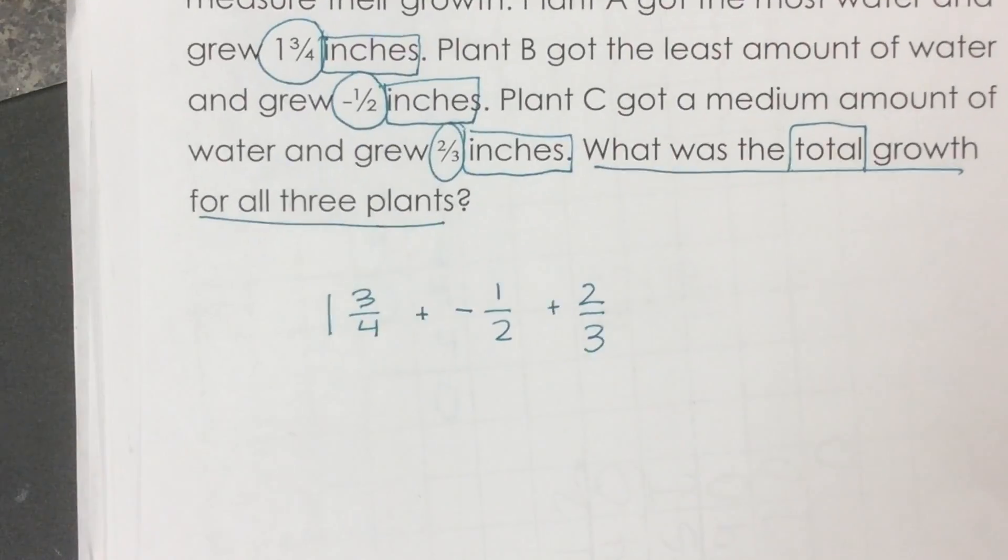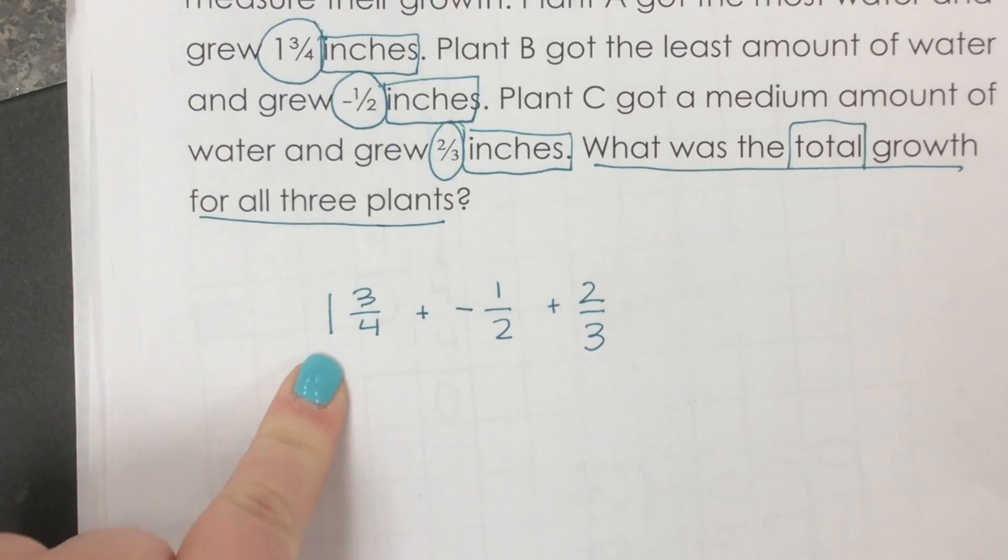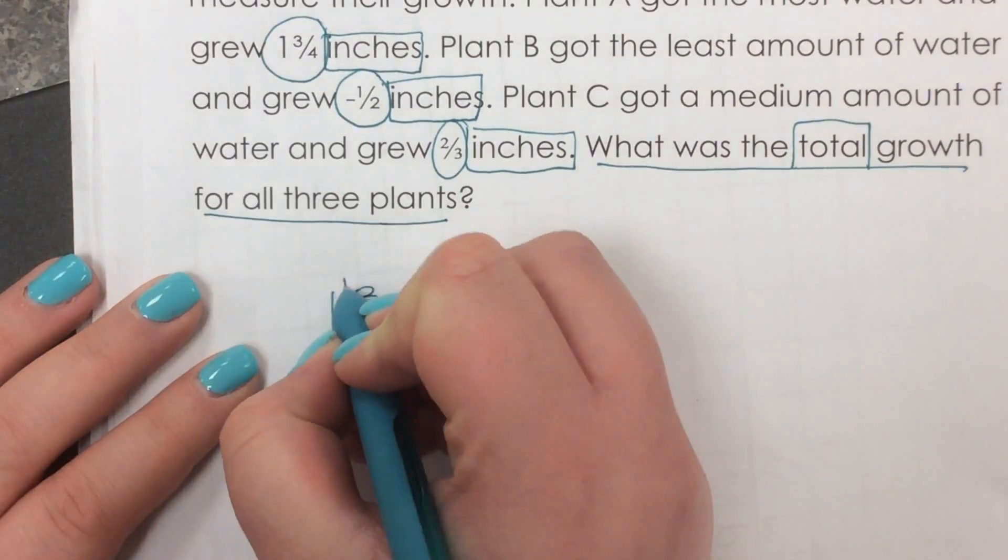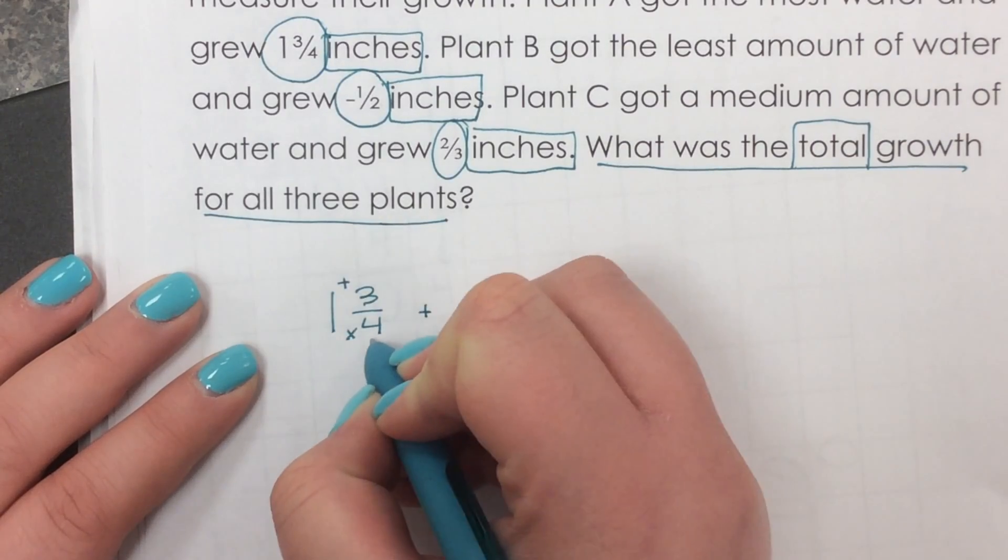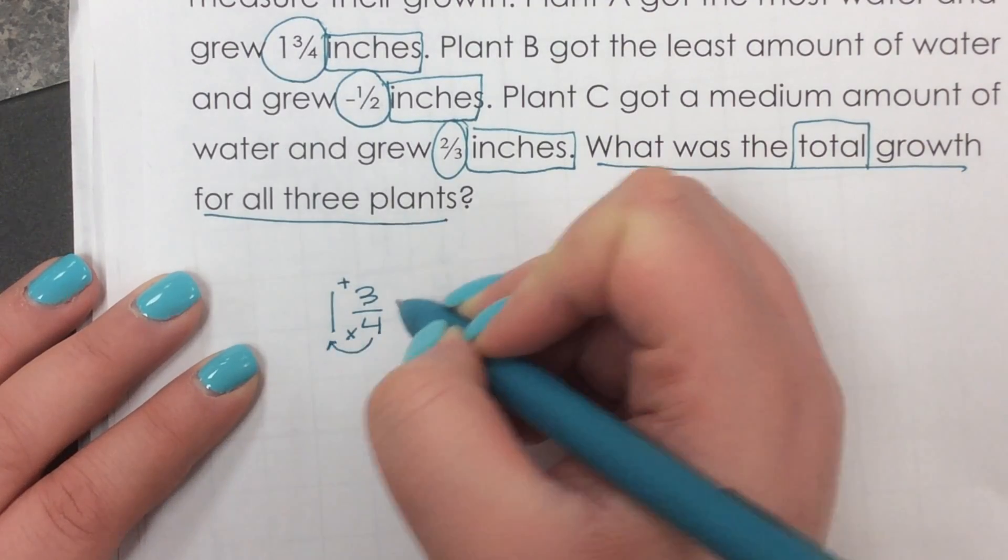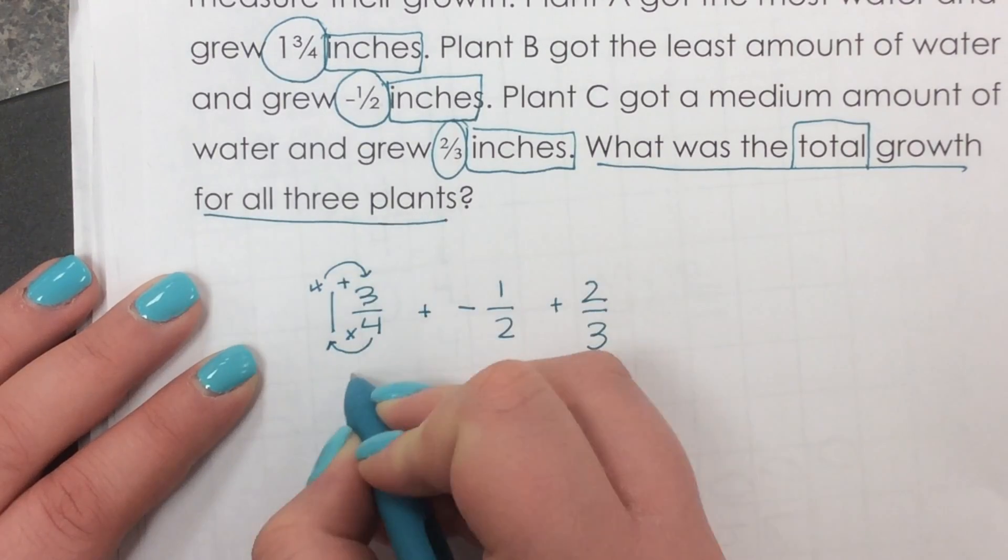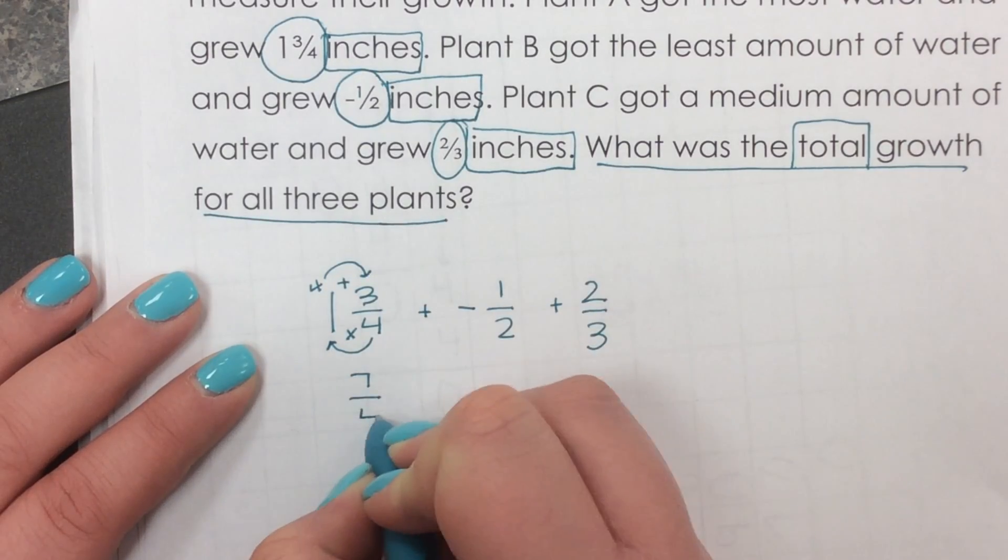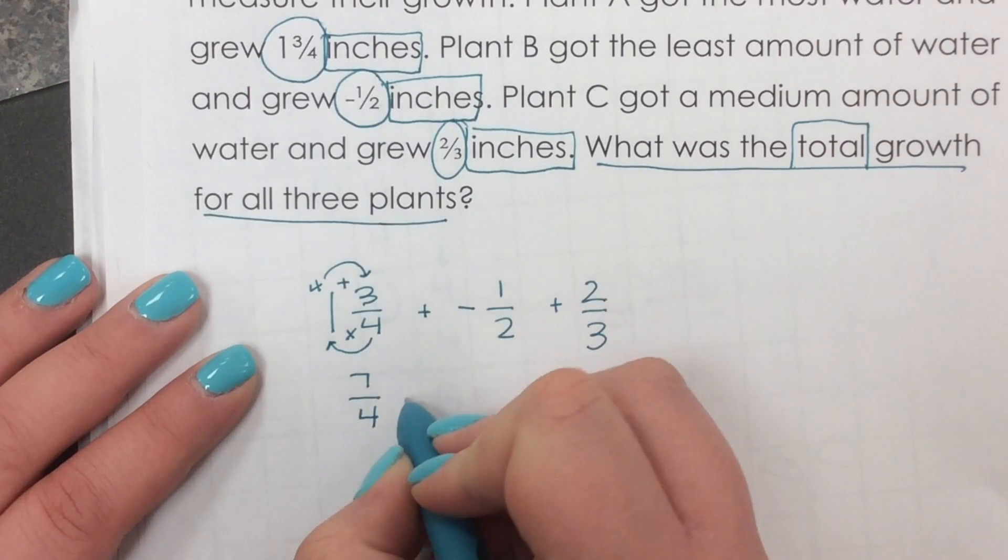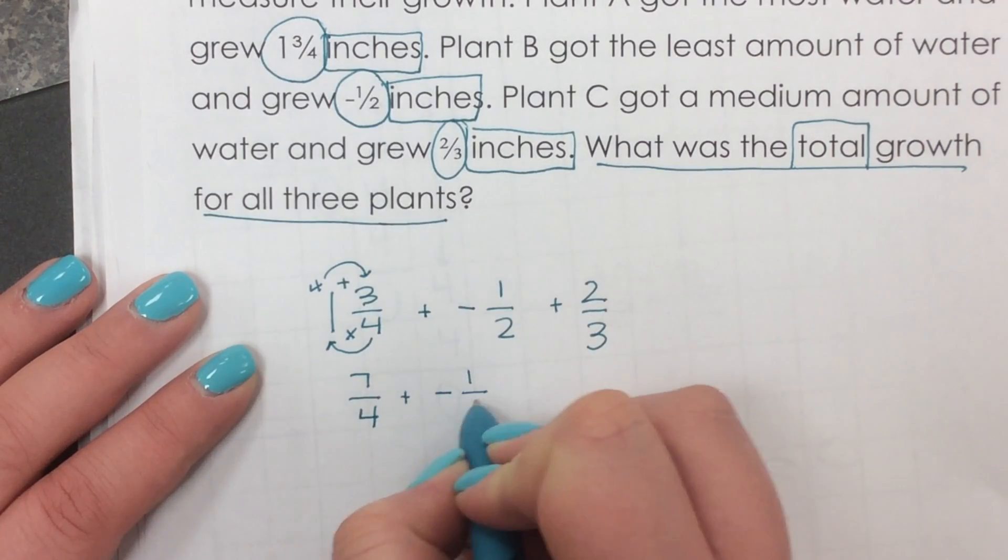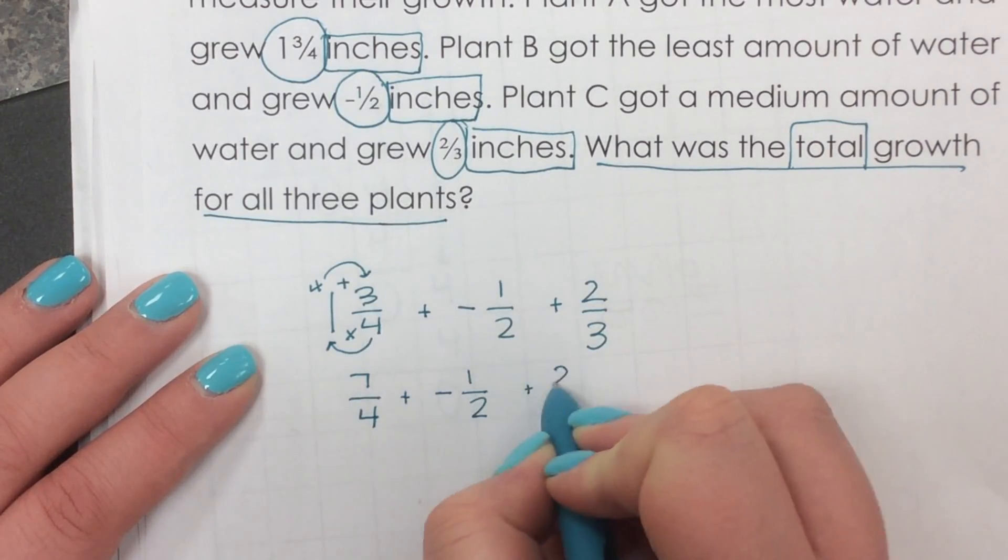So I'm going to work from left to right to add these. Now, there are a couple ways I can go about doing this, but I'm going to change this to be a mixed number just because I like working with mixed numbers better. So four times one is going to give me four. Then I'm going to add three. So that's going to be seven fourths because I will keep the denominator plus negative one half. And then we still have our plus two thirds.